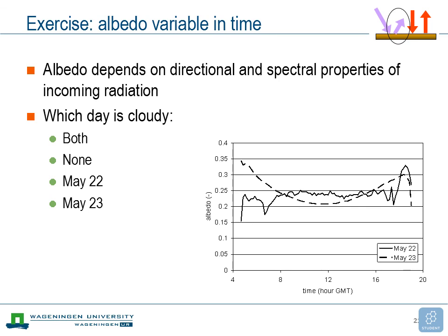Leaving the spectral dependence aside for now, let's focus on the directional dependence of the albedo. Here we have a graph with albedo from two different days for the same surface: May 22 and May 23. For the dashed line there's a very clear dependence of albedo during the day, whereas for the solid line the albedo is rather constant. The question is: which day is cloudy — May 22, May 23, both, or neither?